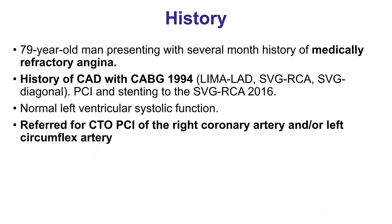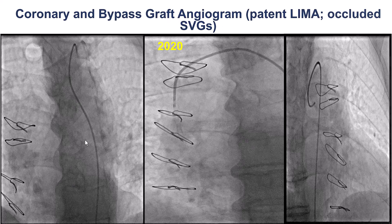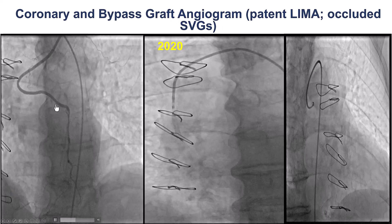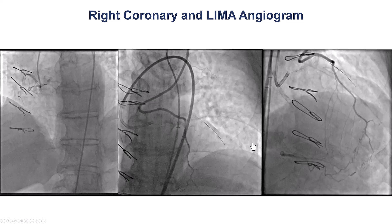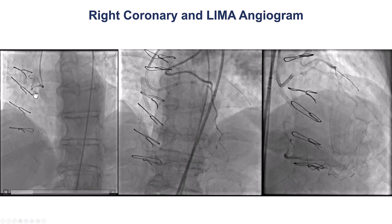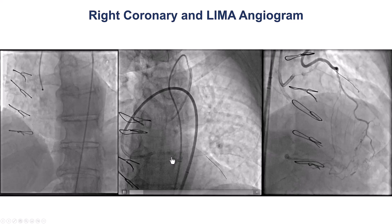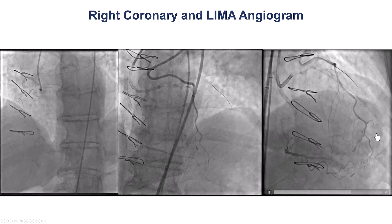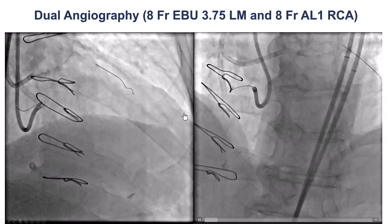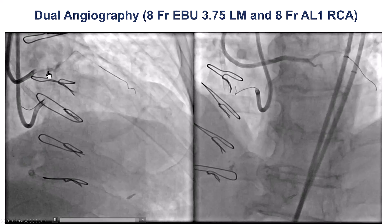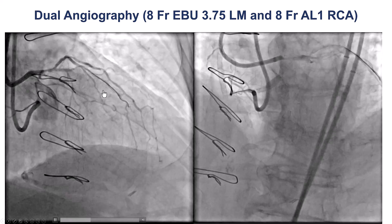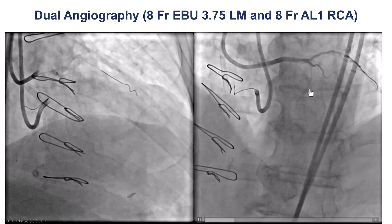The patient was referred for PCI because of severe angina. He had previous coronary bypass graft surgery, and he was known to have occlusion of the saphenous vein grafts, with the LIMA to LAD being patent. His coronary angiogram shows a native RCA with a CTO, and the distal vessel is filling through collaterals from the left. The LIMA is patent and filling the LAD. There is significant disease in the native left coronary artery, including significant distal left main disease, a significant lesion into the first diagonal, and a CTO of the circumflex.